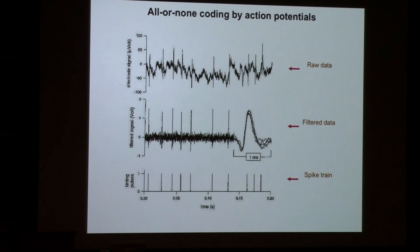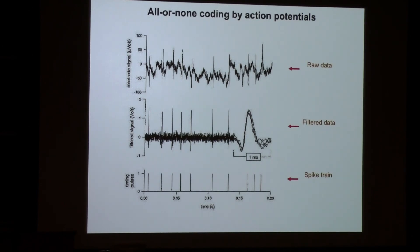One of the most important properties of action potentials is that they are all-or-none. You either have one action potential or no action potential — there is no half or quarter. The action potential is a discrete event.